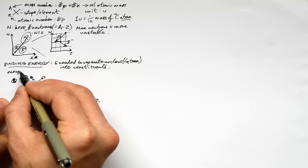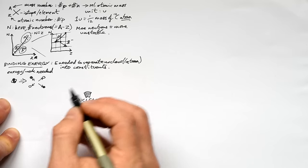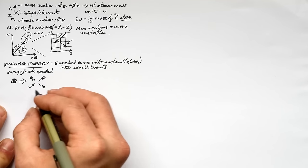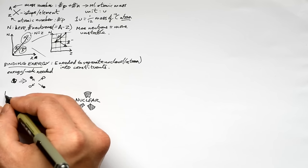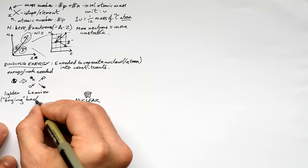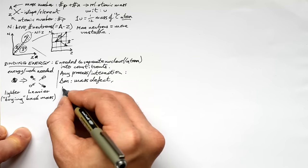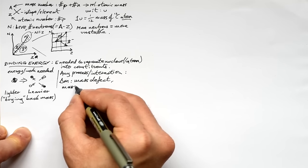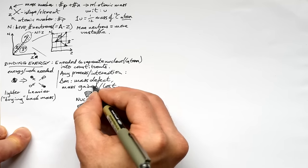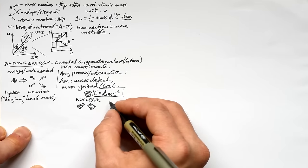Binding energy is the energy required to separate a nucleus into its constituent parts. The nucleus is lighter than its constituents — think of it as buying back mass with the energy put in. The difference in mass is called the mass defect. The energy released or put into the interaction equals the mass defect times c squared.